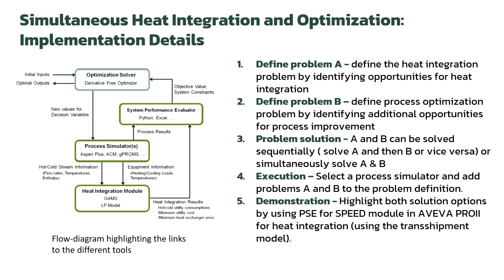The starting point is a process that has been designed and simulated already. First, define Problem A using information about the hot streams that need to be cooled and the cold streams that need to be heated. Next, define Problem B by looking for options to further improve the process — for example, minimize the heat duty or the compressor cost. Problem solution and execution will be demonstrated through the HYSYS Pro2 simulator, where a user-defined module for heat integration developed by PSE4Speed is applied.